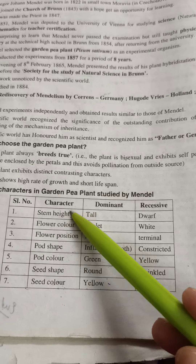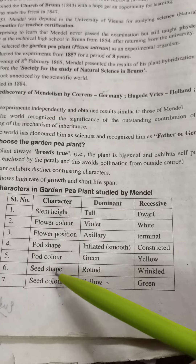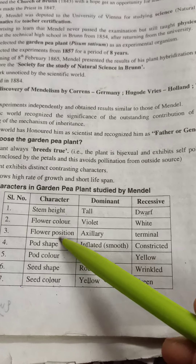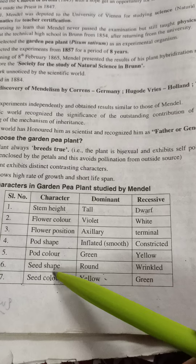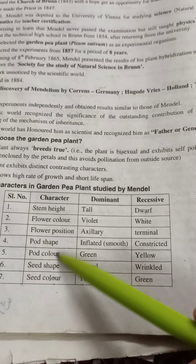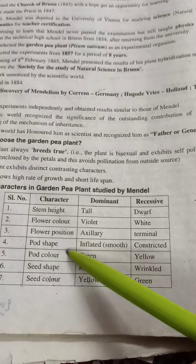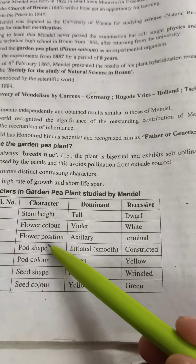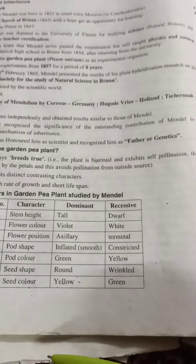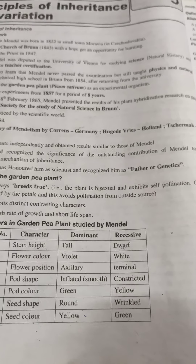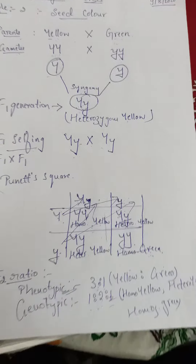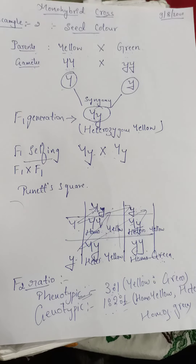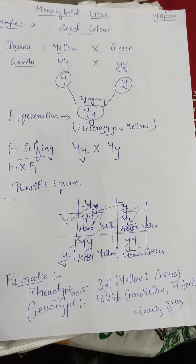I have done stem height and seed color — the remaining five characters are there. Out of those five, perform any three examples in your running notes. Hope it is understood. If you have any doubts, you can clarify. Thank you.